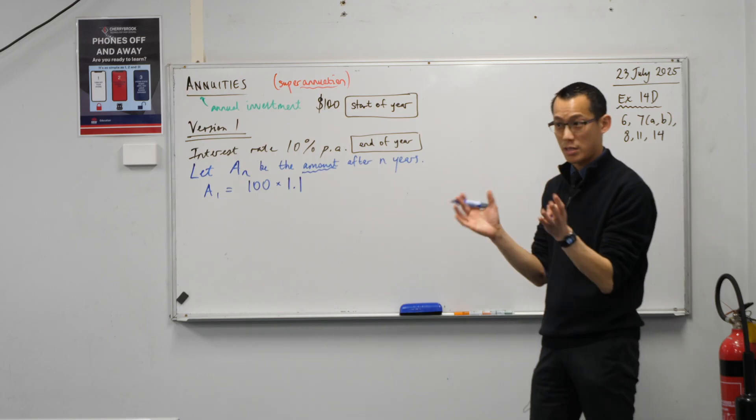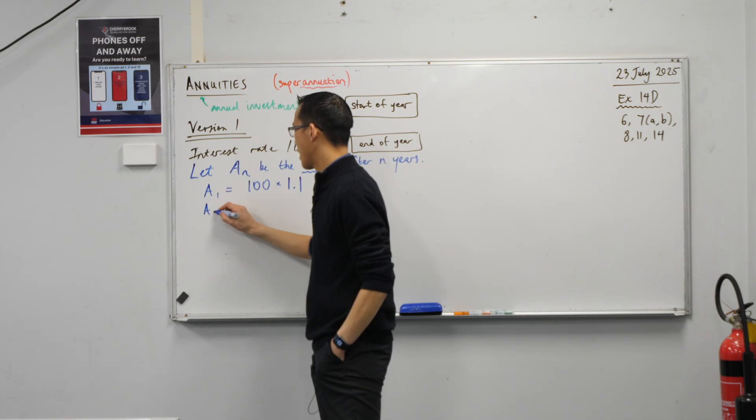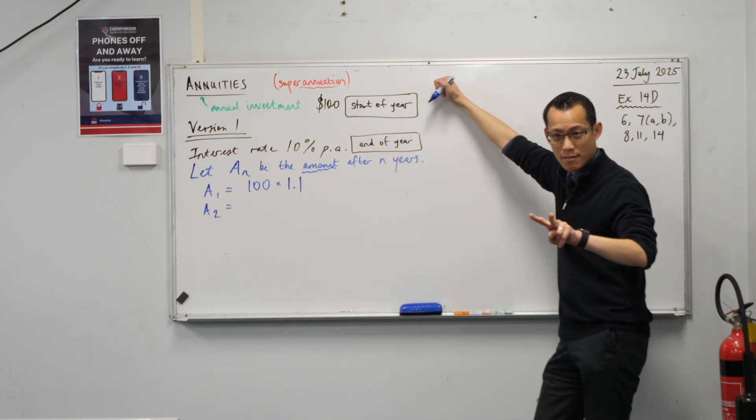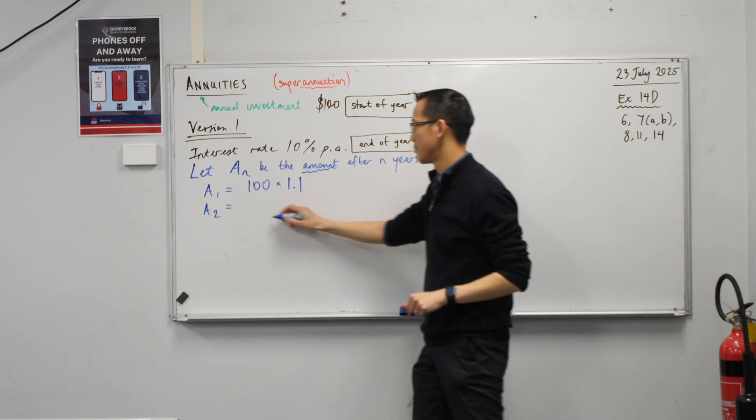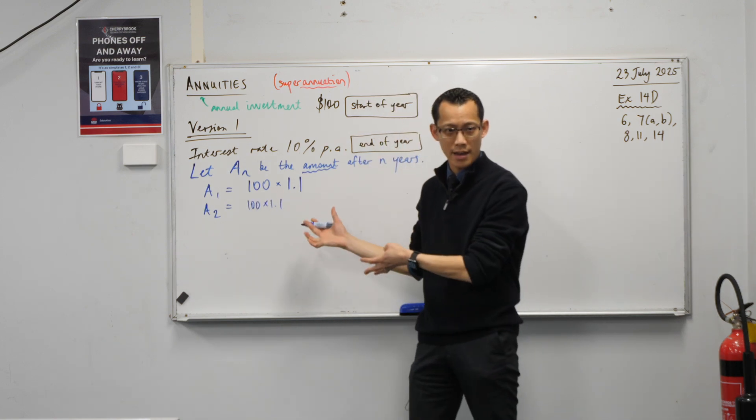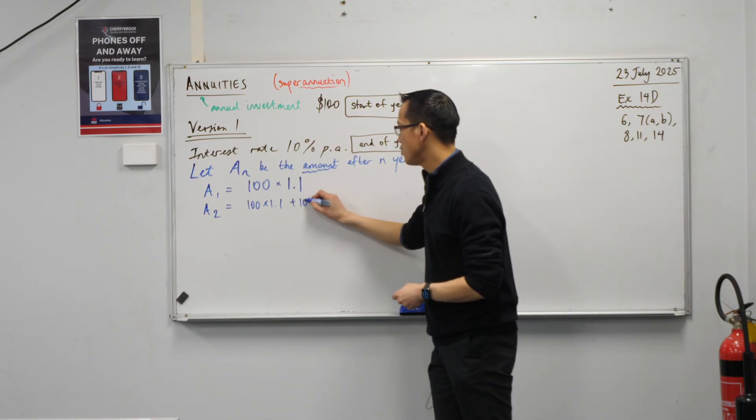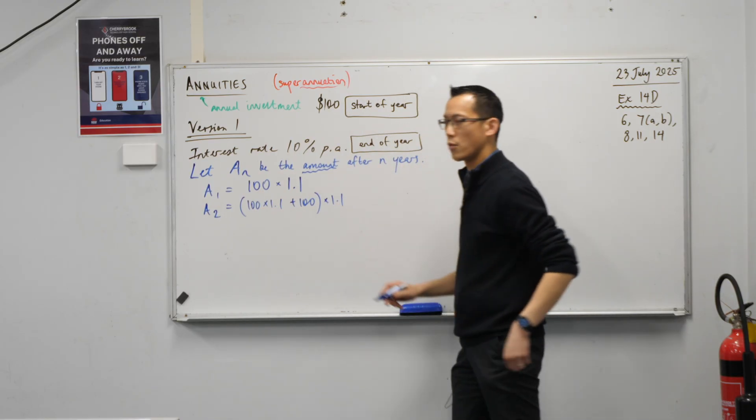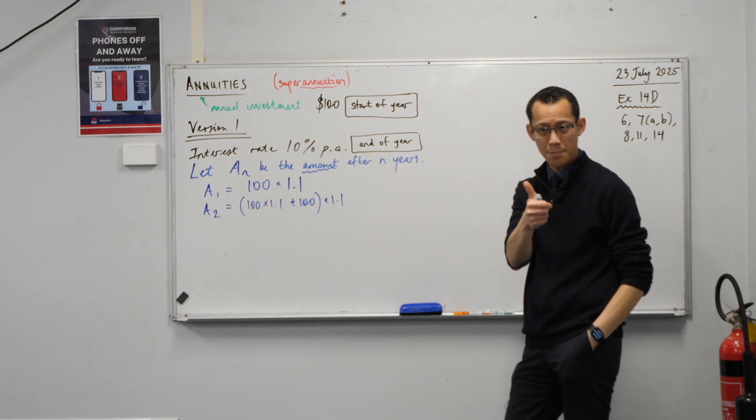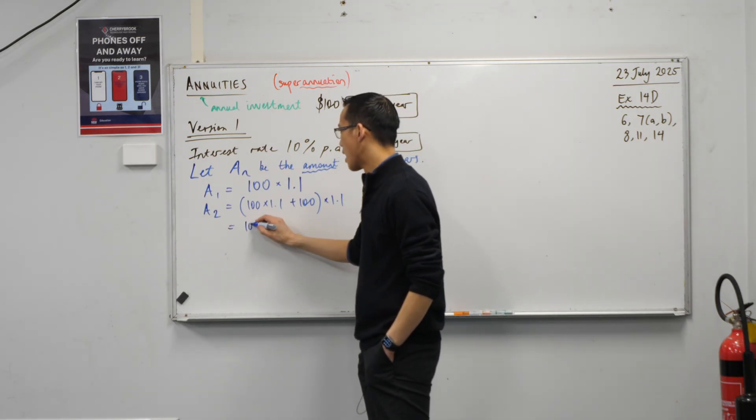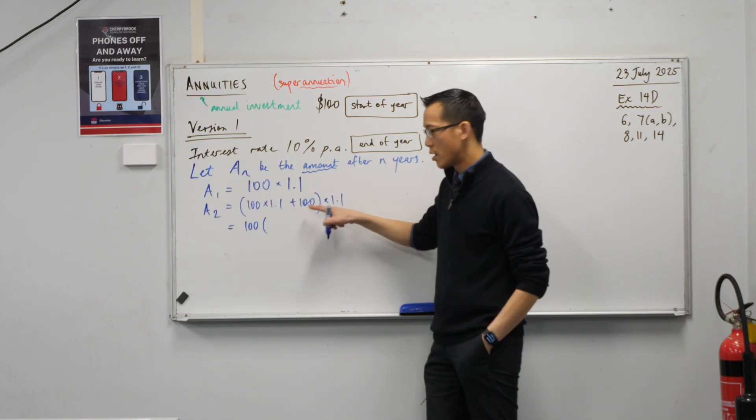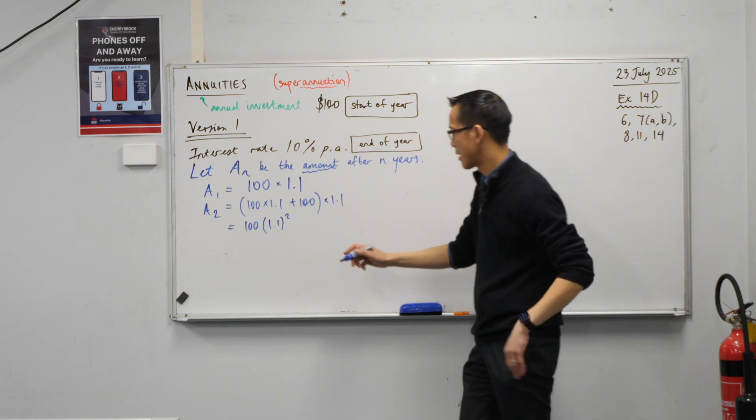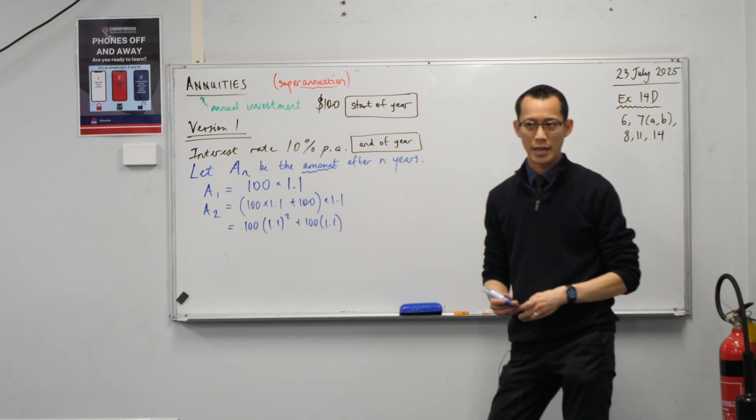Now we need to build up a pattern here. As with all series and sequences, we need to establish what's going on over time. So what happens next year? Just like in the first year, two things happen. There's a new deposit, and then there's an interest calculation. We already have this amount in there. So we put a new deposit in, and then all of that is in the account. So that gets multiplied by 1.1. Following so far? I'm going to write this as 100 times 1.1 squared, and then there's this other amount, 1.1.